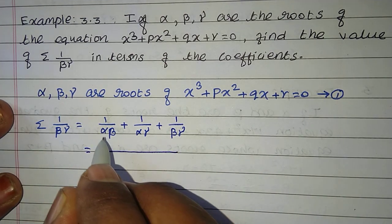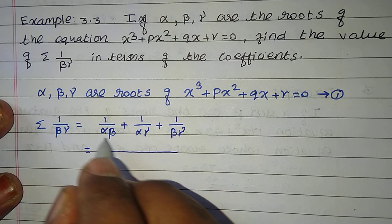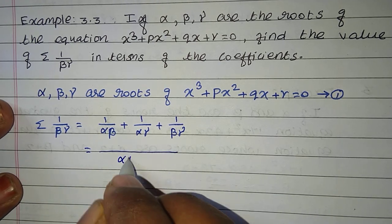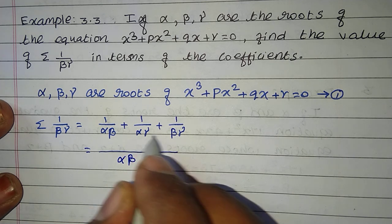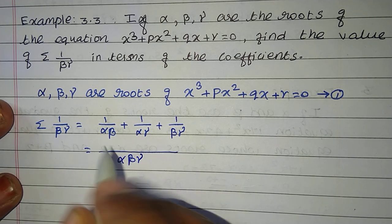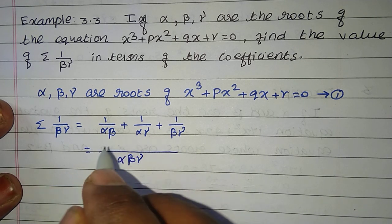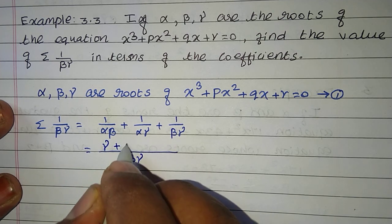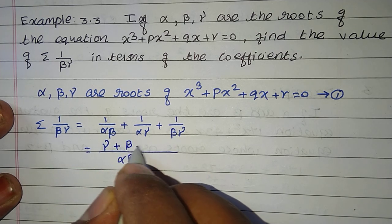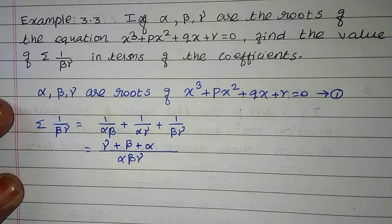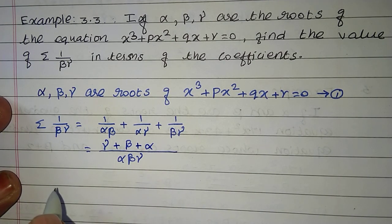Taking LCM as alpha beta gamma: alpha beta gives gamma, alpha gamma gives beta, and beta gamma gives alpha. So the numerator becomes alpha plus beta plus gamma.